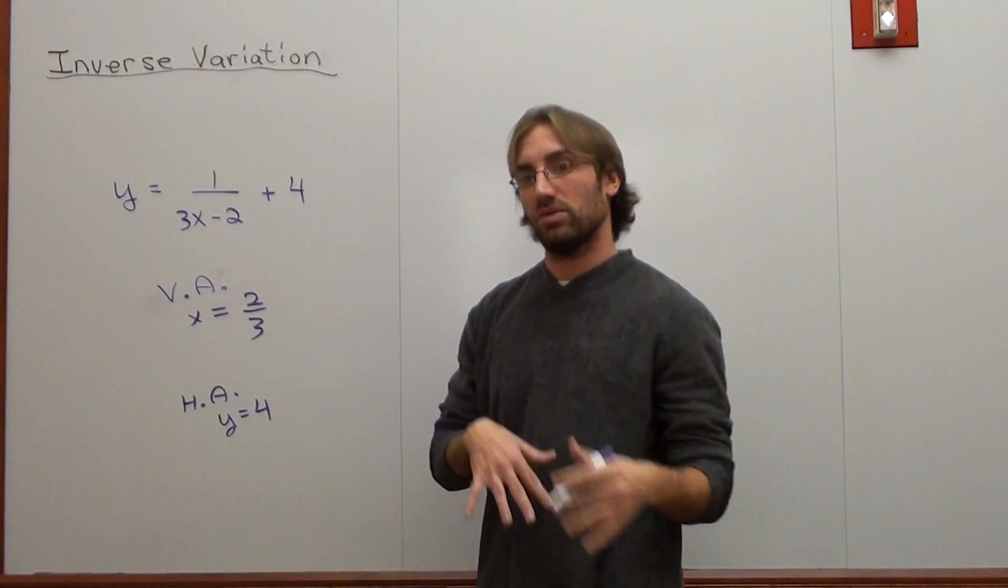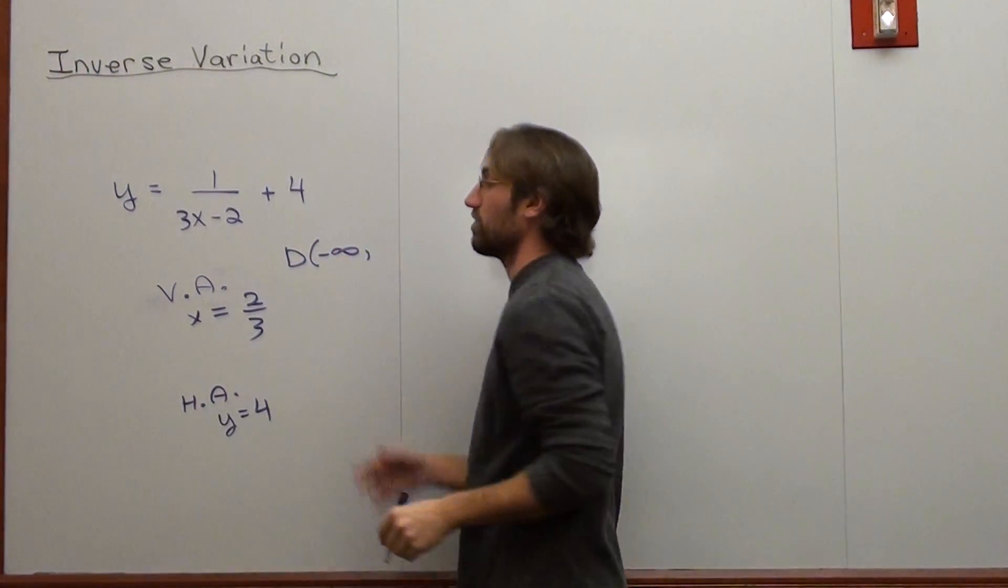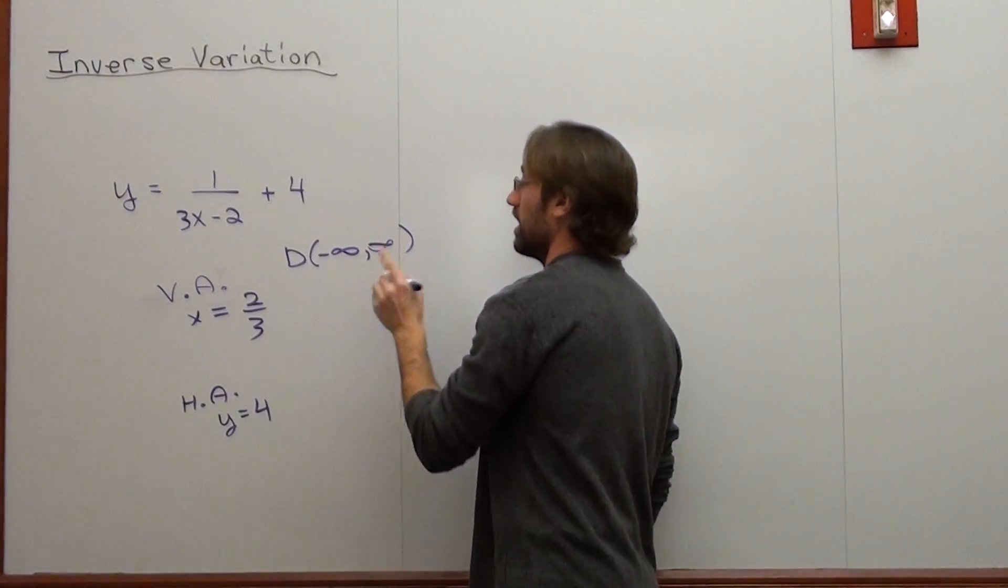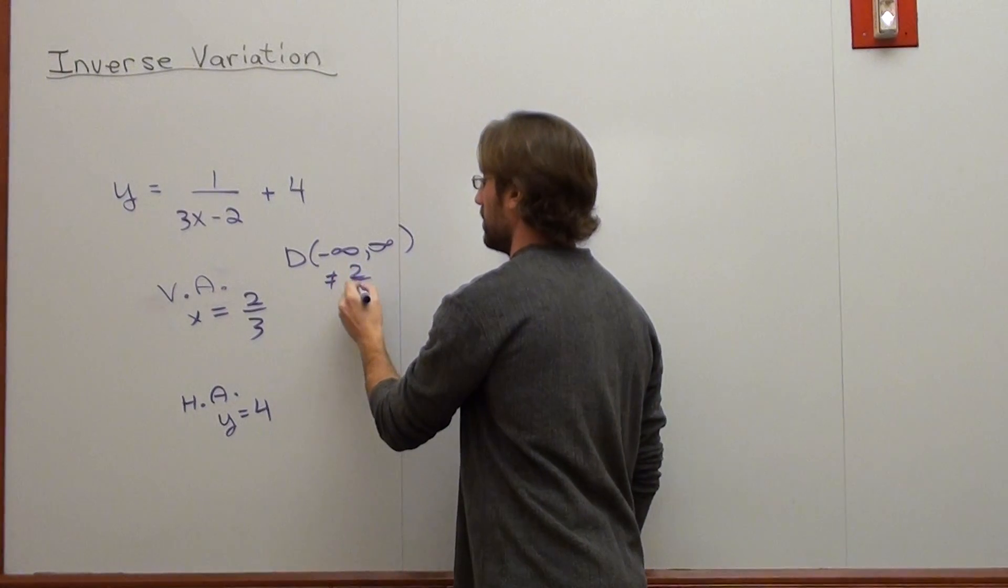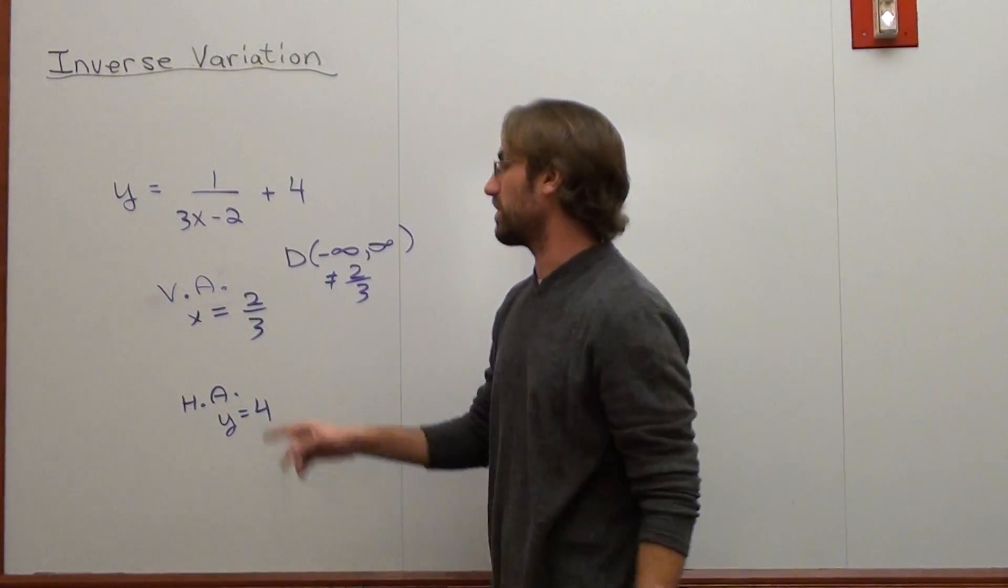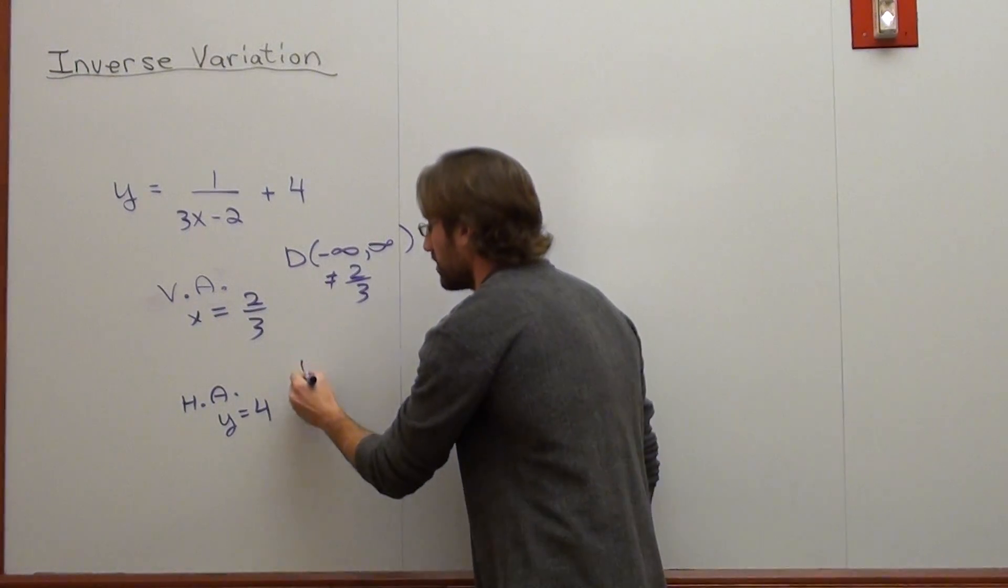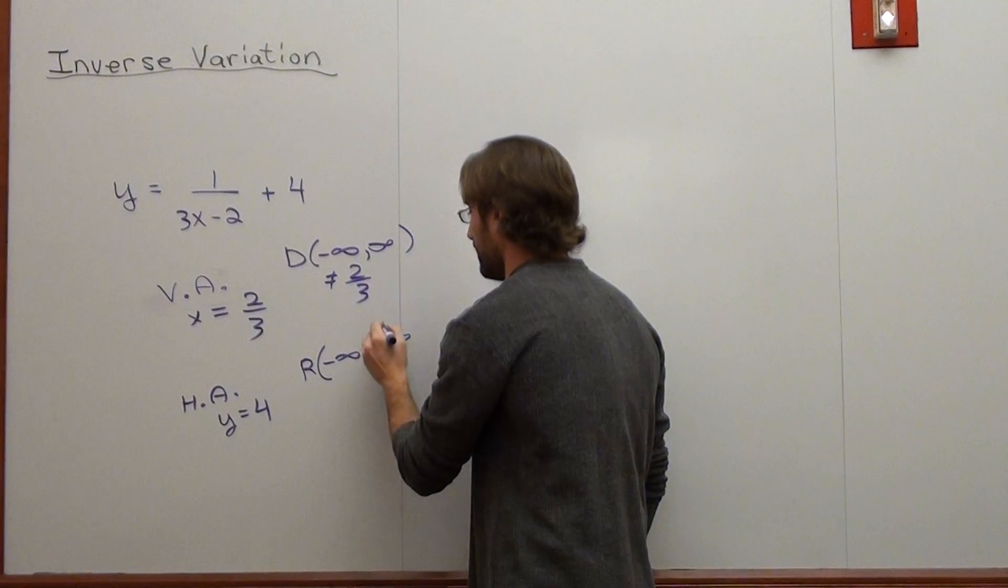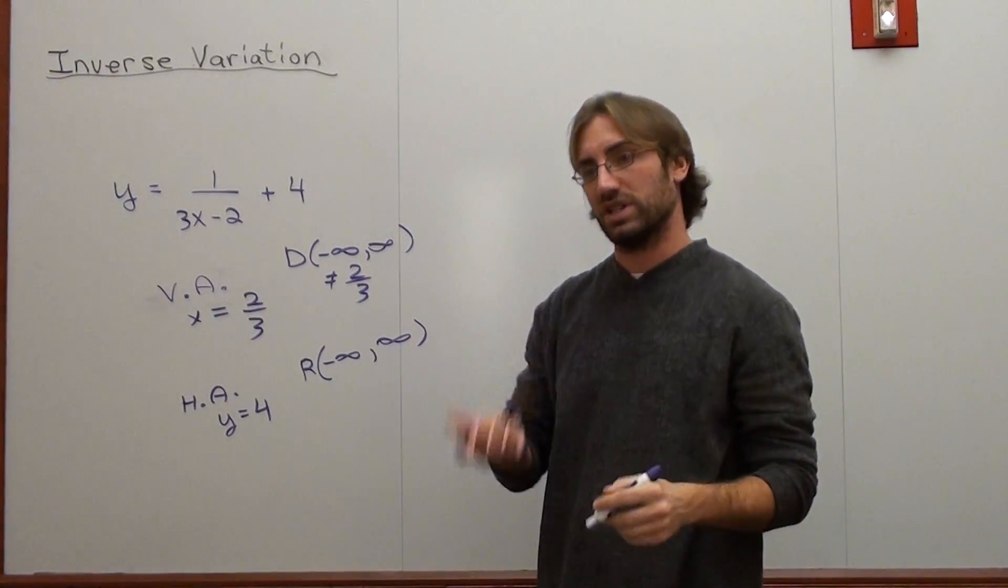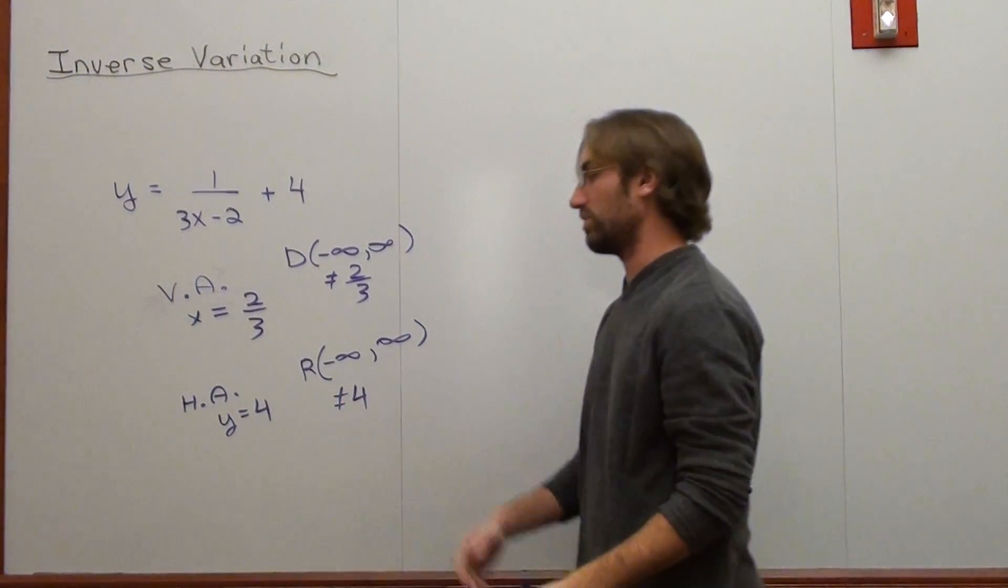When it comes to domain and range, the domain on these type of functions is from negative infinity to infinity, excluding the horizontal asymptote. So it's not at 2/3. And the range, excuse me, the vertical asymptote, I believe I said horizontal, I meant vertical. And the range is from negative infinity to infinity, but it does not include the horizontal asymptote, which is 4. So it's not equal to 4. But other than that, it includes everything.